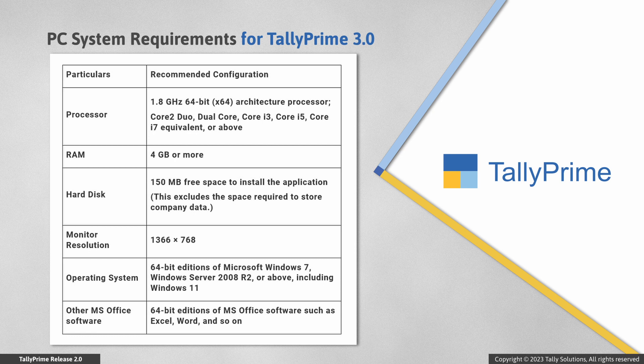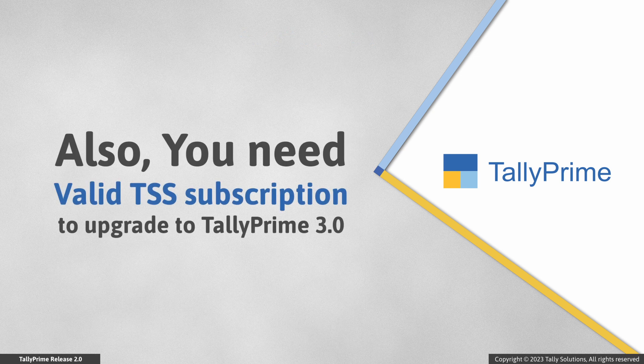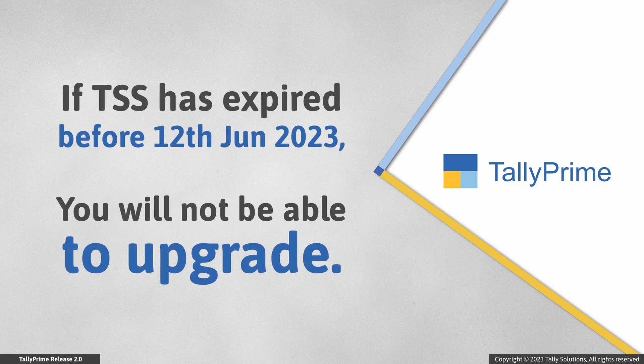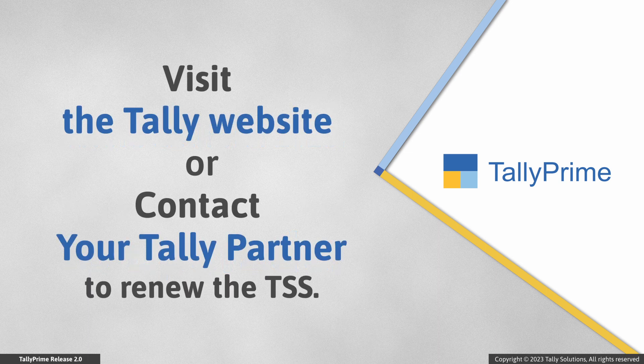To upgrade to Tally Prime, you need to have a 64-bit Windows operating system with the recommended configuration shown in the table. You need to have a valid TSS subscription. If TSS has expired before 12th of June 2023, you will not be able to upgrade. Visit the Tally website or contact your partner to renew the TSS.